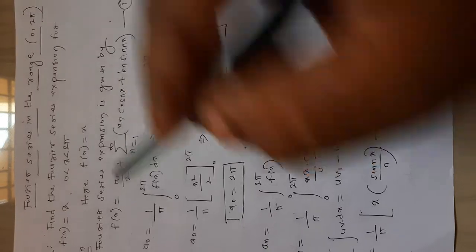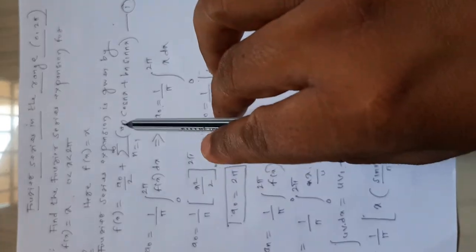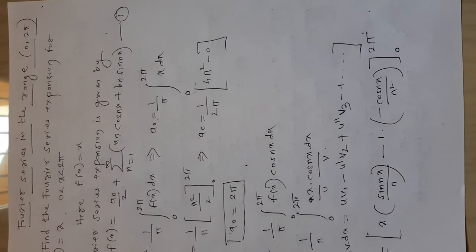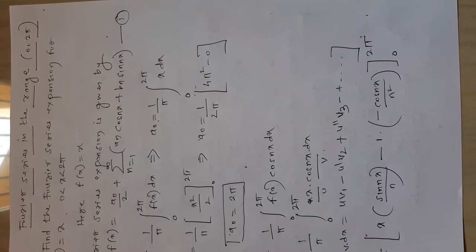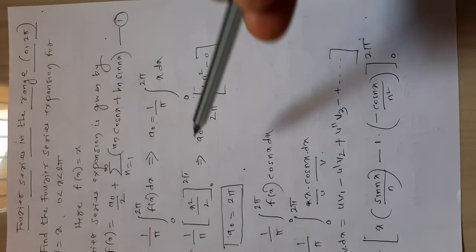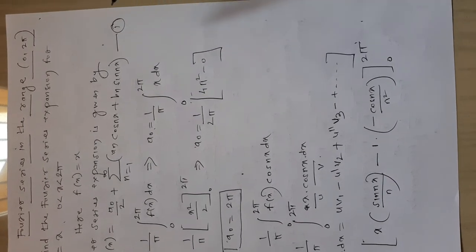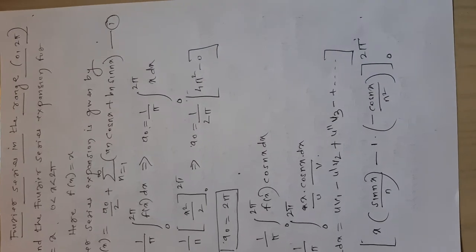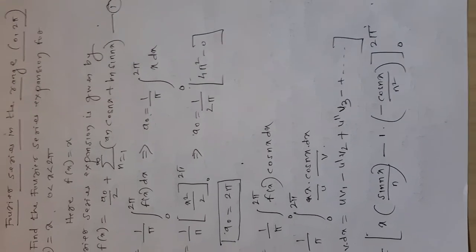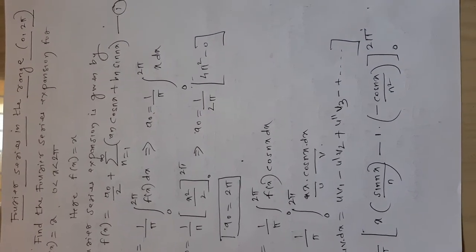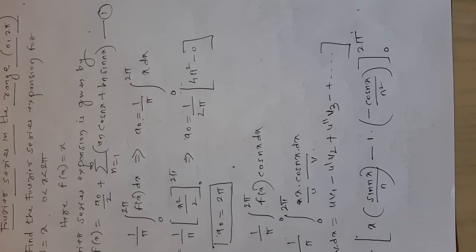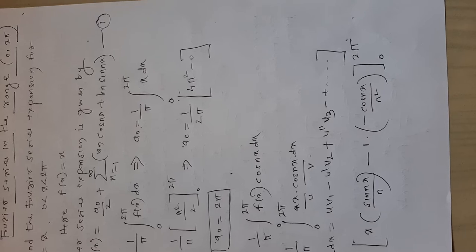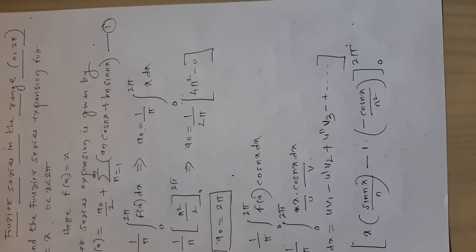First we will write the formula. Fourier series expansion is given by f(x) = a0/2 + summation n=1 to infinity of (an·cos(nx) + bn·sin(nx)). We note this as equation number 1. We will calculate the values of a0, an, and bn, and at the end we will put these values in equation number 1 to get the required Fourier series.